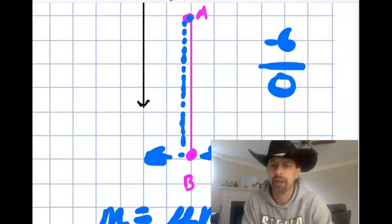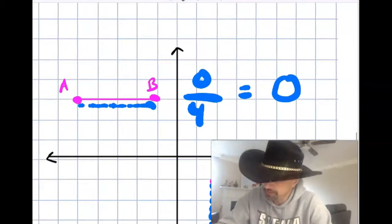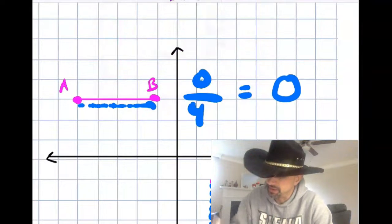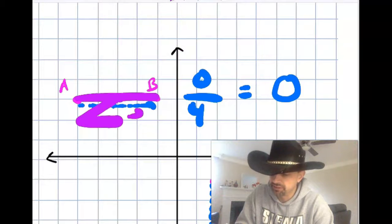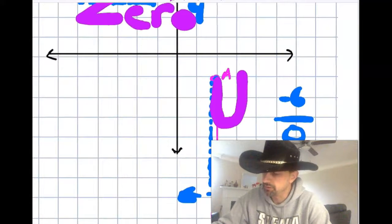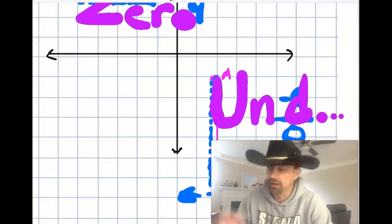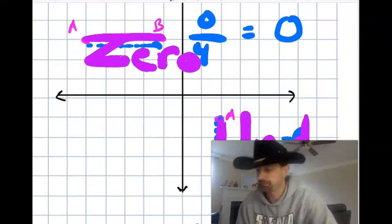You probably remember that from back in the day. One way I was taught to remember that is that out of a horizontal line, you can make the word 0. And out of a vertical line, you can make the word undefined. So you can make a Z and a U this way and this way.